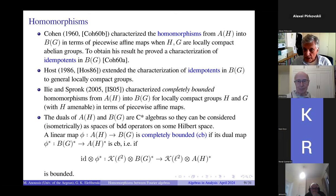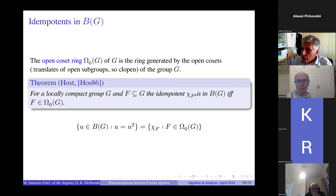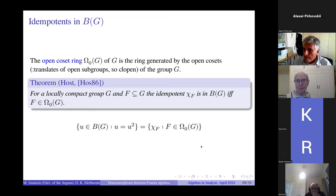Host's theorem of 1986 states: if you have a locally compact group G and take a function in B of G which is an idempotent, it must be the characteristic function of some set. A characteristic function chi_F is in B of G if and only if the set F belongs to the open coset ring of G — the ring generated by open cosets, which are translates of open subgroups; elements of the open coset ring are thus open and closed.